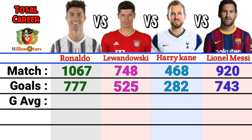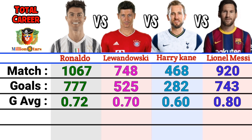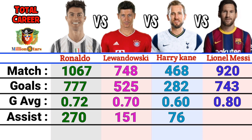Goals average: Ronaldo 0.72, Lewandowski 0.70, Harry Kane 0.60, Lionel Messi 0.80. Assists: Ronaldo 270, Lewandowski 151, Harry Kane 76, Lionel Messi 355.